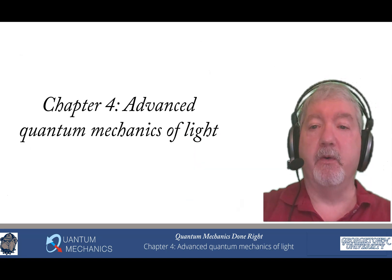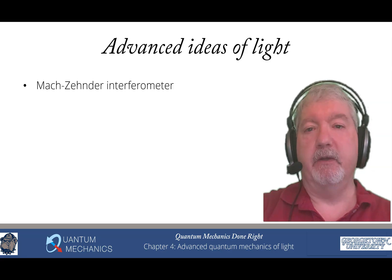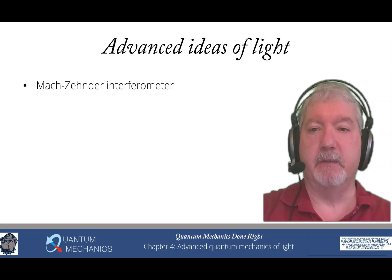So chapter 4 is the advanced quantum mechanics of light. We start off by talking about the Mach-Zehnder interferometer and motivating the ideas behind how you can do a quantum seeing in the dark experiment.